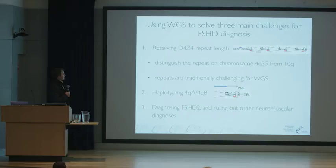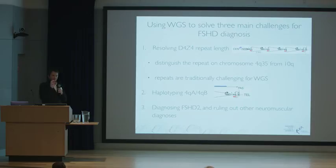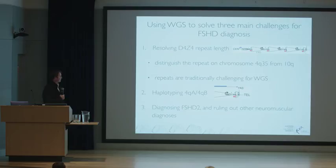One of the key challenges is how do we resolve this repeat array length. If the repeat length is short, that's usually a bad outcome for the disease; if it's long, that's usually permissive of a normal repeat. We need to be able to distinguish the one on chromosome 4Q — the bad one — from the one on chromosome 10. This type of technology usually can't be used for repeats, but I think we've got a way to get through that.